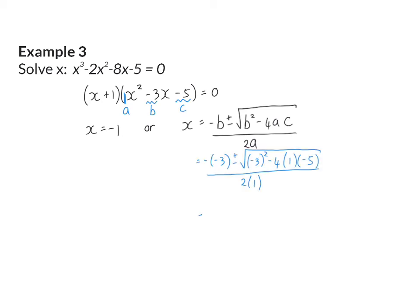Once you've substituted into the equation, you can simplify, and then use your calculator to determine your two irrational answers of 4.19 or minus 1.19. So here, once again, we have three real solutions, of which two are irrational.